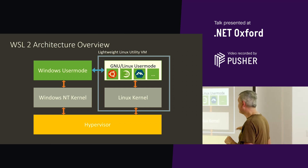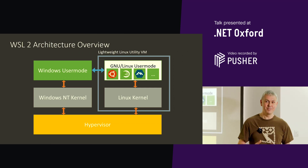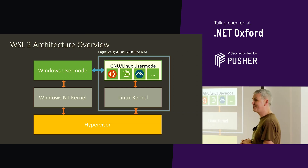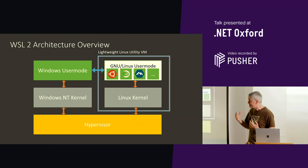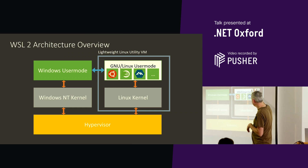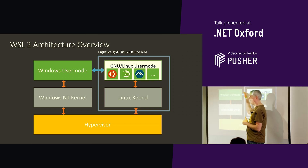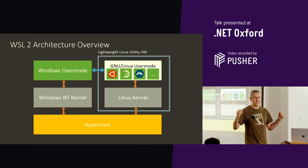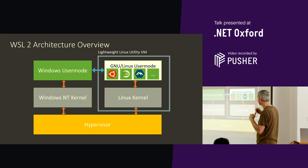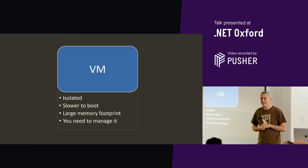WSL version 2 does away with that translation layer and instead gives you a virtual machine running the Linux kernel. At that point, your translation issues go away. You still keep your user mode pieces for the distros — that sits on top of the Linux kernel. Some magic happens to communicate between Linux user mode and Windows user mode to give you the integration. But essentially the core of this is coming from a VM.